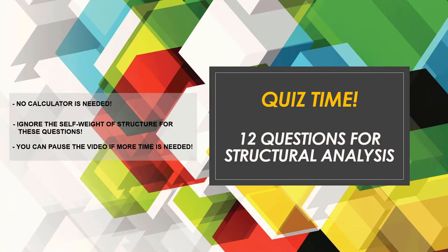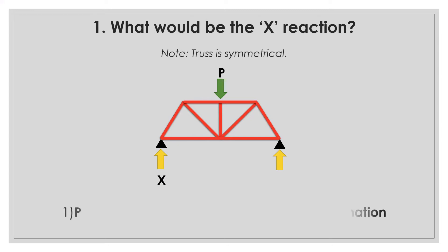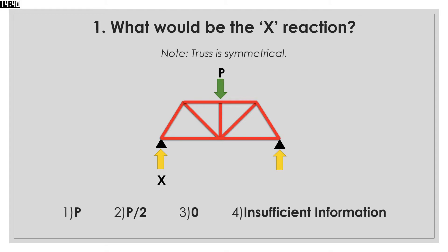What would be the X reaction? This is a symmetrical truss with a point load in the middle, and the question is asking about the reaction on the left support. Since the truss is symmetrical and the load is applied at the middle, the reaction is simply the load divided by 2.